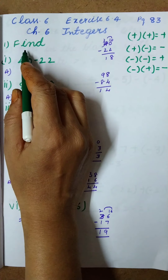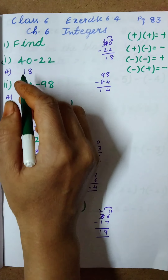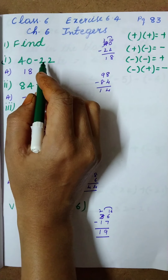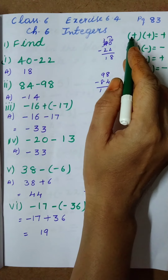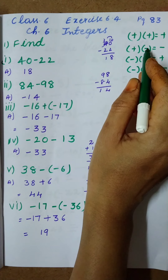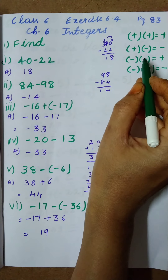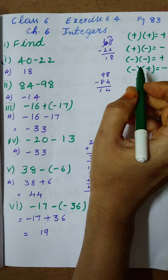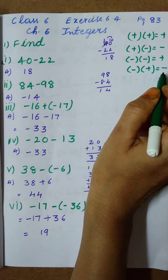First question: find. We have to find these all. First, we should know: plus into plus gives plus; plus into minus gives minus; minus into minus gives plus; minus into plus gives minus.